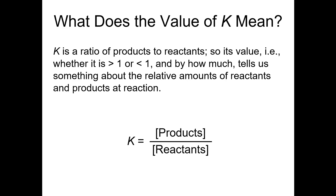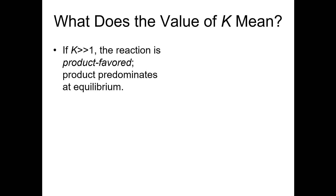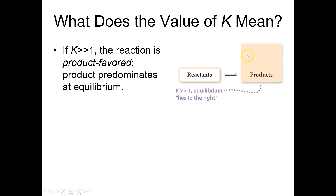K is the ratio of products to reactants. At its core it's a ratio of products to reactants, so it tells us something about how much product or reactant is left at equilibrium. If K is much larger than one, we use the term 'product favored reaction,' meaning products predominate at equilibrium — we've got a much larger numerator than denominator. We would say the equilibrium lies to the right if K is much greater than one.